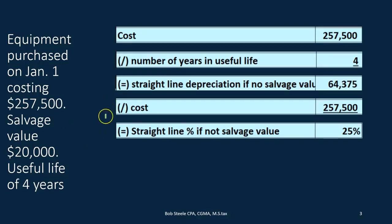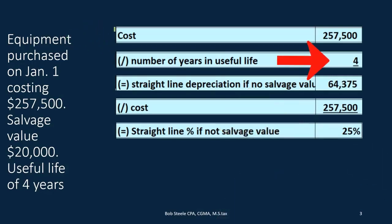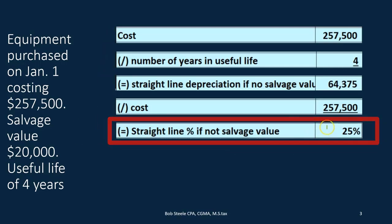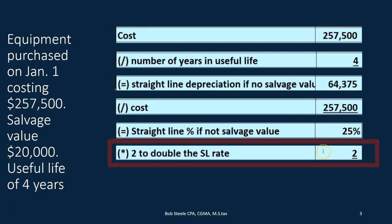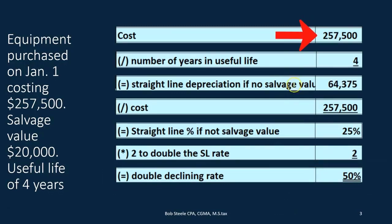The shortcut is simply to take 1 divided by the number of years — 1/4 for a four-year property — giving us 0.25 or 25%. This is the straight-line rate if there were no salvage value. We then double it because it's the double declining method, giving us a 50% rate. We'll apply this 50% to the book value each year rather than the original straight-line 25%.